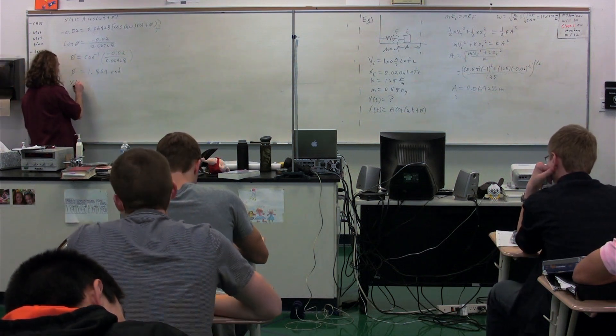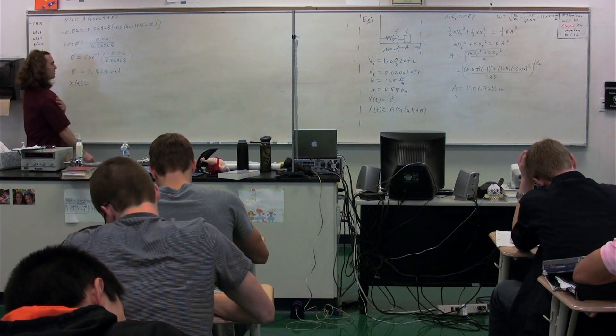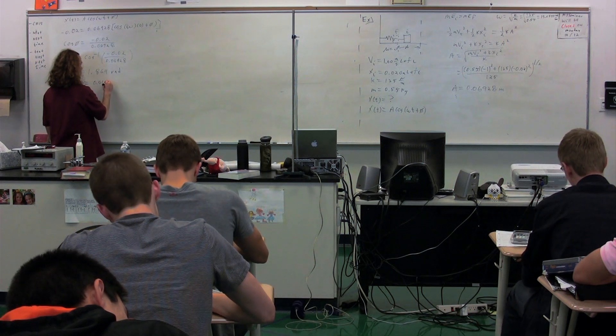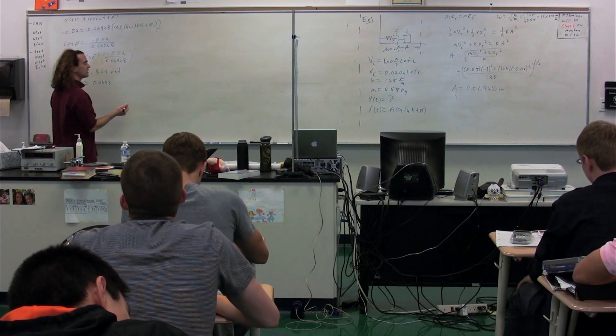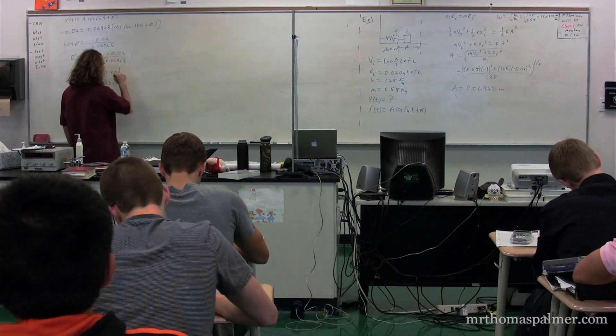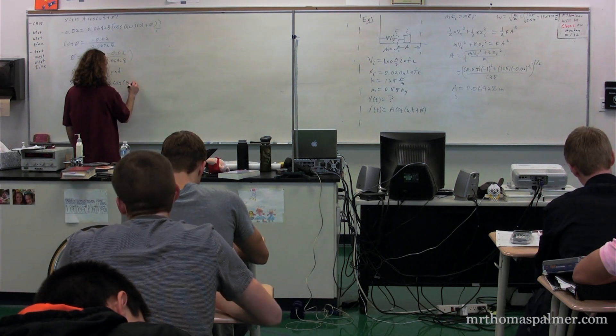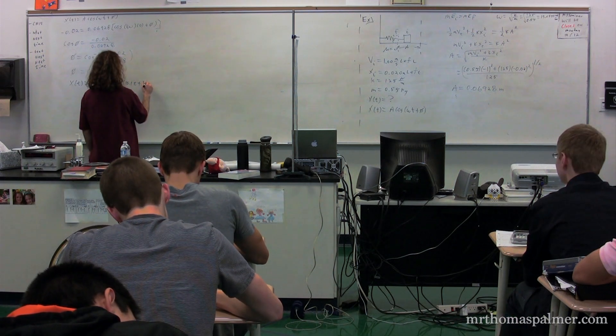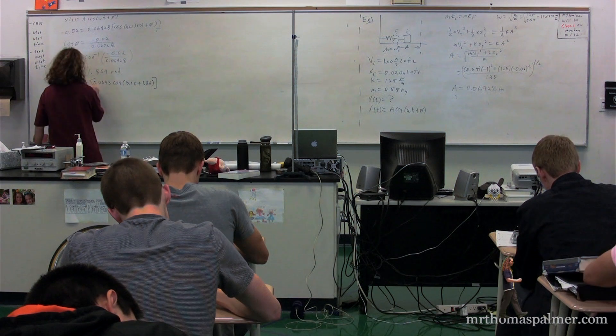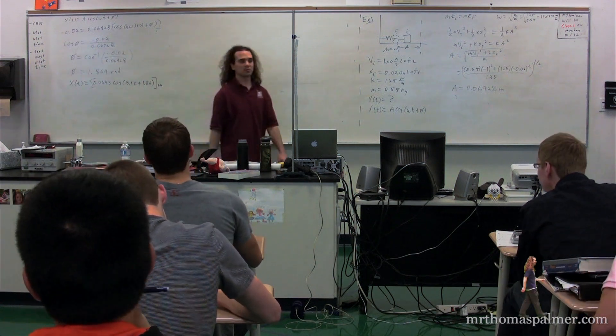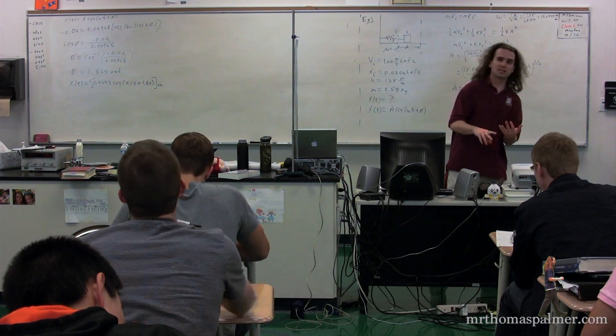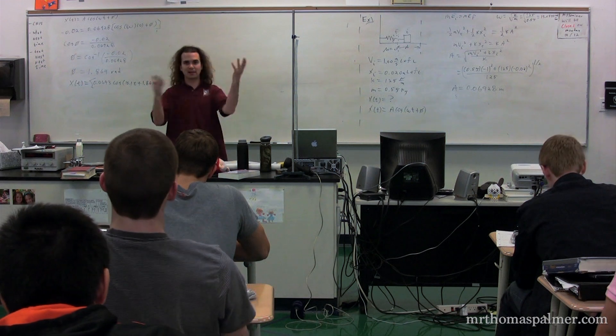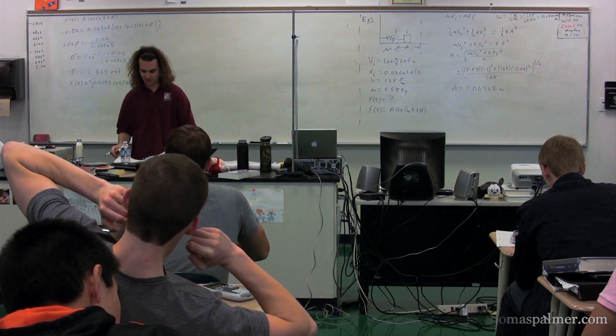So, we get the position as a function of time, then, is equal to... Vlad, give me all the numbers here. Amplitude? Amplitude is going to be 0.06928. So, 0.0693, because we'll do three sig figs, times the cosine of omega, which is 15.1 T plus phi, 1.86. And that would be in meters. So, we figured out the position as a function of time. Clearly, from here, we can figure out the velocity, the acceleration. We can even figure out the net force. We can figure out the velocity maximum, the acceleration maximum, all sorts of stuff. We're not going to go through and do that. We have other things to do.